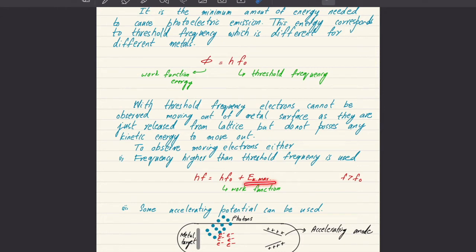This remaining kinetic energy is called the maximum kinetic energy, because we assume the electrons are not losing any energy due to collisions with atoms of the metal lattice. This applies only when electrons are emitted from the surface. If an electron is emitted from deeper inside, it will lose energy and carry kinetic energy less than the maximum kinetic energy.